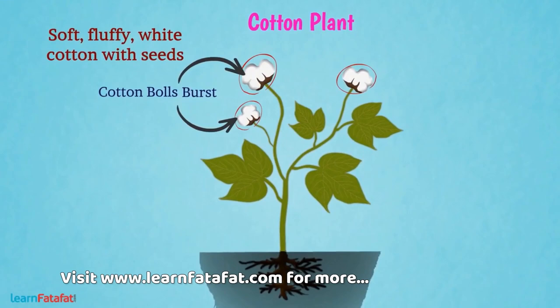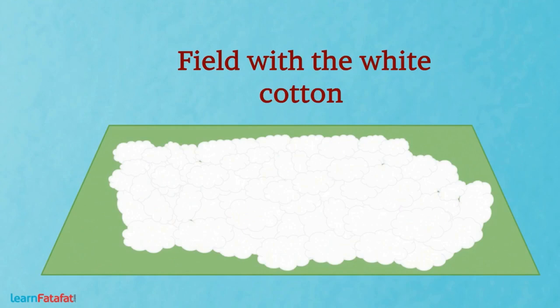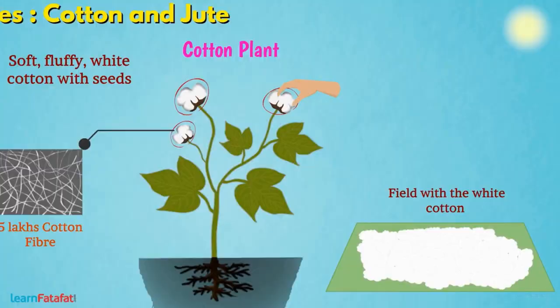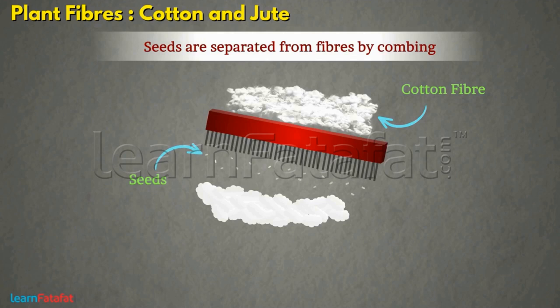A single cotton ball can contain about 5 lakh cotton fibers. If you look at a field with white cotton, it looks as if the field is covered with snow. Cotton is picked from the balls by hand. The seeds are separated from fibers by combing. This process is called ginning of the cotton.